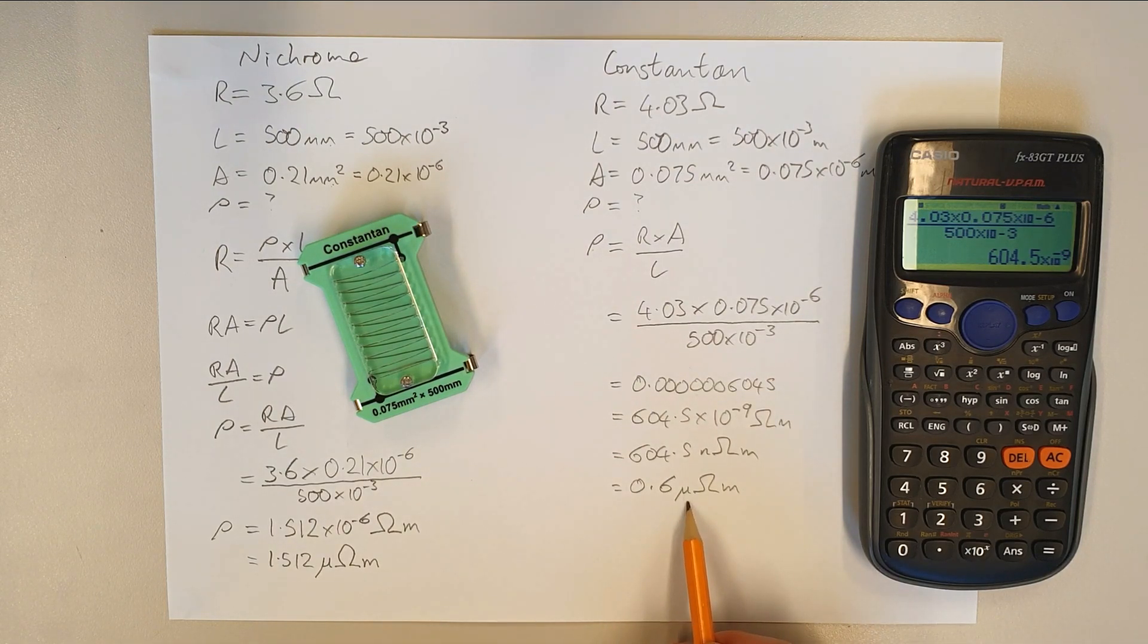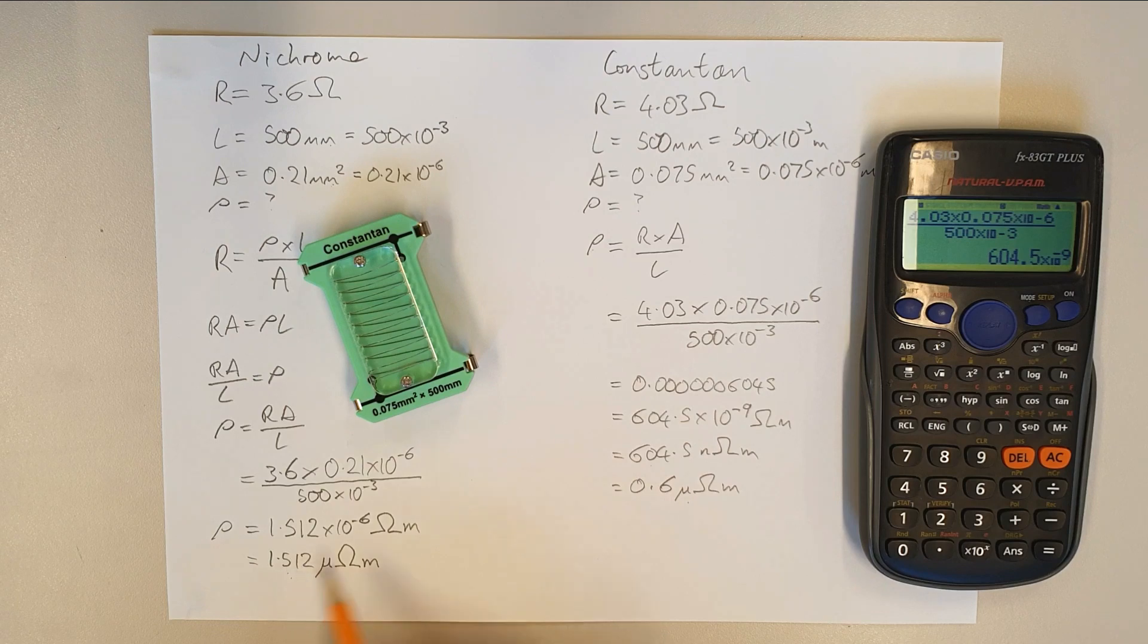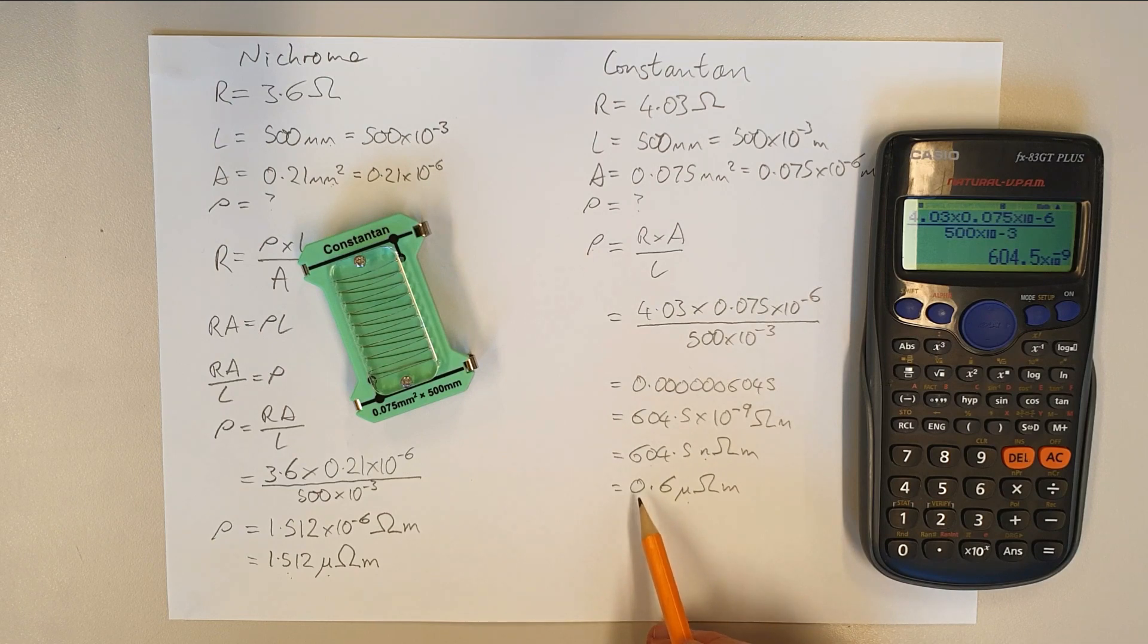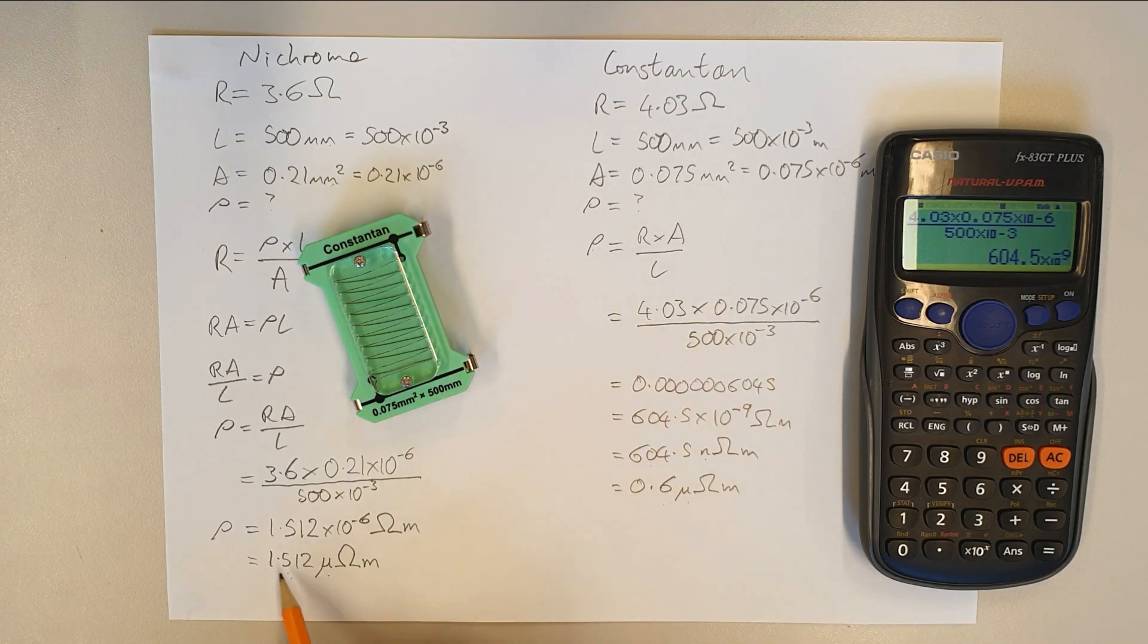And you can see how putting it into this form helps us to compare it with this value that we've got over here. If we tried to look at this number and compare it with this number, it doesn't make a lot of sense because we've got different submultiples going on. However, here we've got 0.6 micro ohm meters, which gives us an idea that this is a lower resistivity than this. So it just helps us to compare those two values by putting them both into the same submultiple.